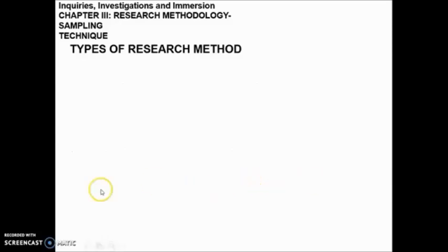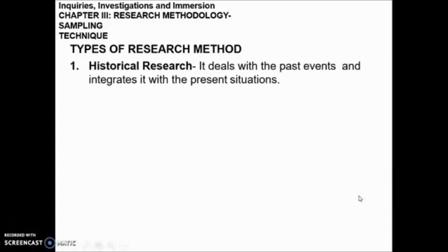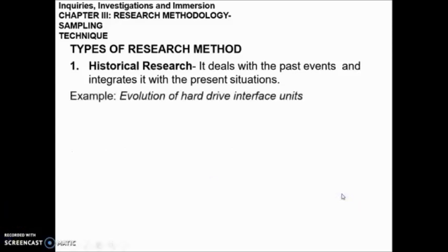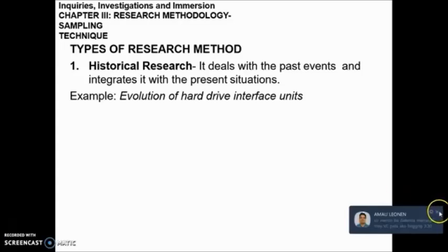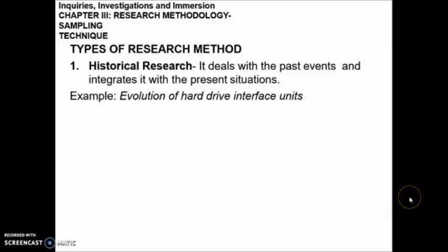We have different types of research method. Number one is historical research — it deals with past events and integrates them with the present situation. An example of this is the evolution of hard drive interface units. Historical research is important because it deals with the study of our past and integrates that into our present situation to make better decisions.